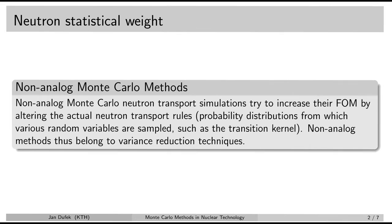Do you remember the importance sampling method? It was one of the general variance reduction techniques for Monte Carlo simulations. The importance sampling technique altered the original probability density function for the input variable in such a way that the samples of the output variable would be more important to us, and in that way the figure of merit of the simulation, the efficiency, was possible to improve.